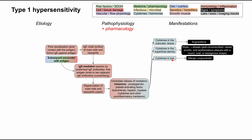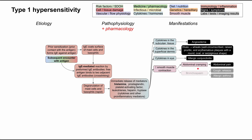If you have histamine release in the eye, you can have allergic conjunctivitis — a red eye picture. In the systemic circulation, histamine and prostaglandins cause smooth muscle contraction throughout the body. In the abdomen, this results in abdominal cramping, manifesting as abdominal pain. In the airways, this results in bronchospasm, producing symptoms of coughing and wheezing — sometimes called allergic asthma.